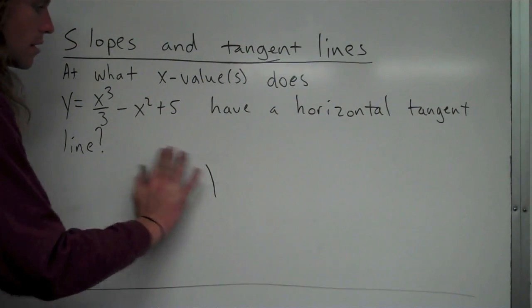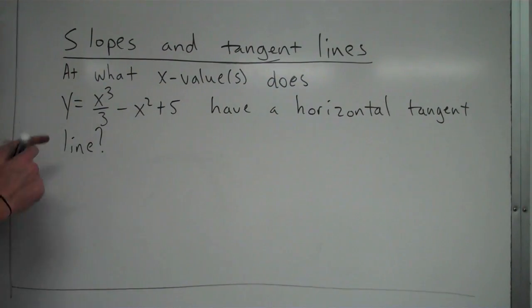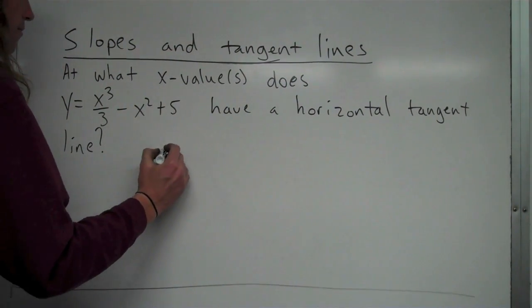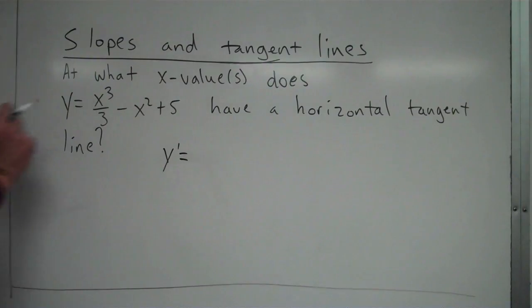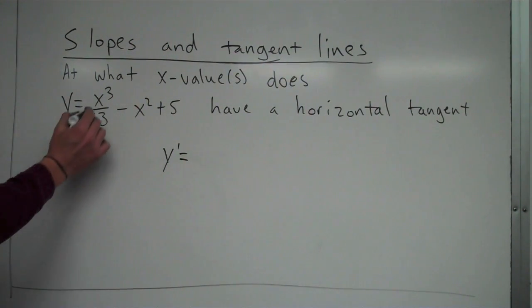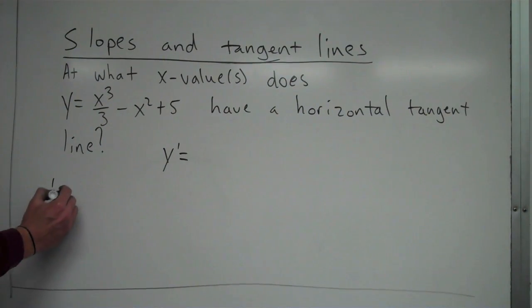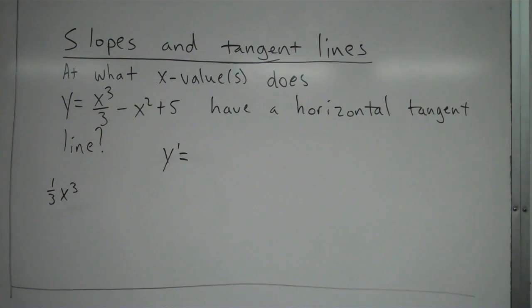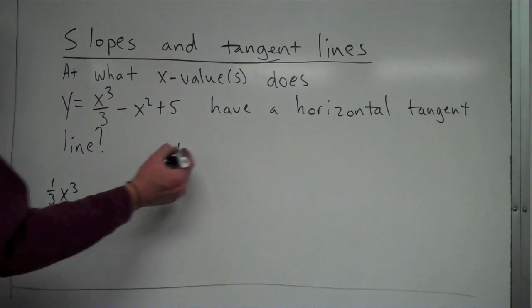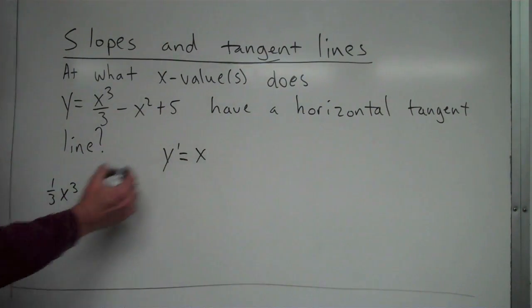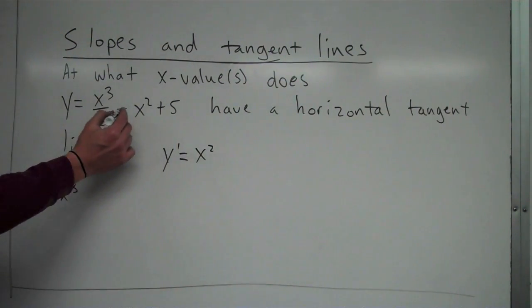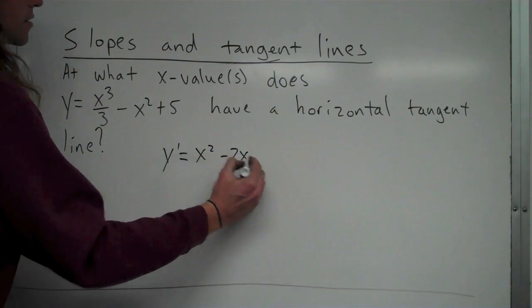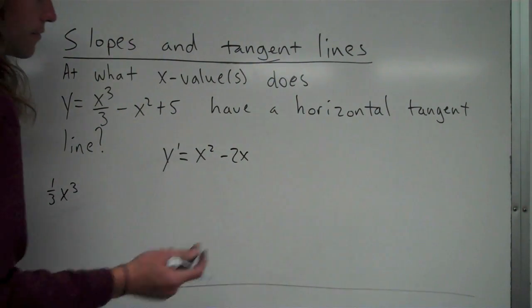Alright, so what we're going to do here is I'm going to find the derivative of this. So derivative, y prime. First take the derivative of x cubed over 3. Some people are more comfortable rewriting it as 1 third times x cubed. Either way is fine, but in that case you'll see the 3 goes in front to multiply by the 1 third, which will, 3 times a third is just 1, so I don't have to write the 1. And then it becomes x squared. And then I take the derivative of this, it's going to be minus 2x using the power rule. The derivative of 5, a constant, is just 0.